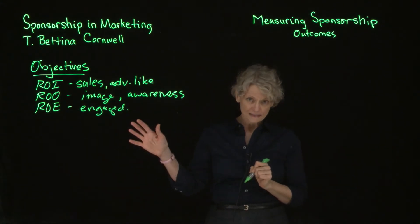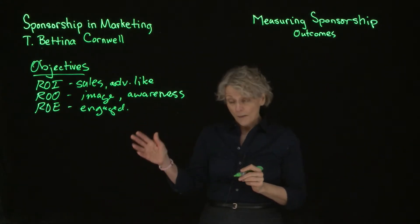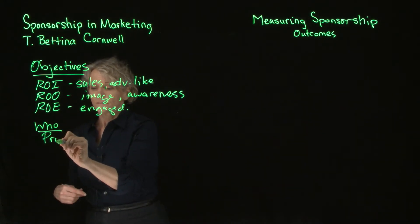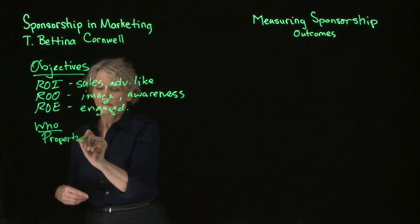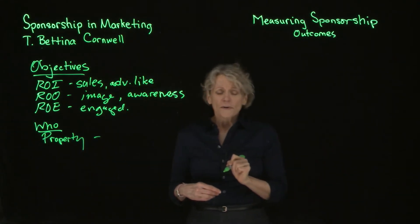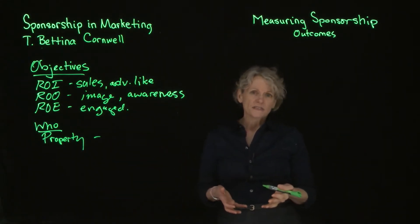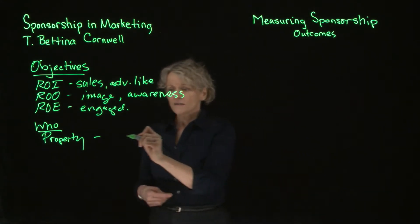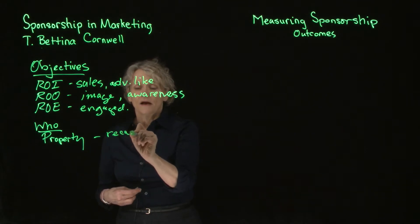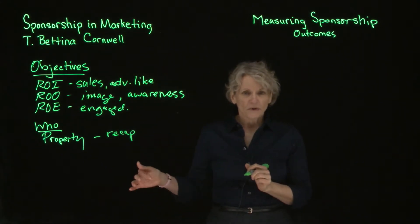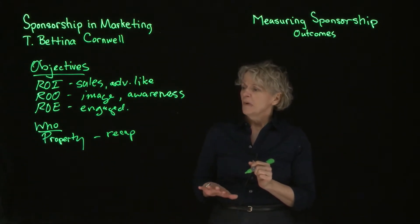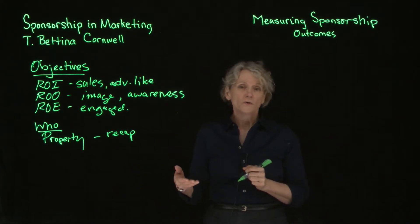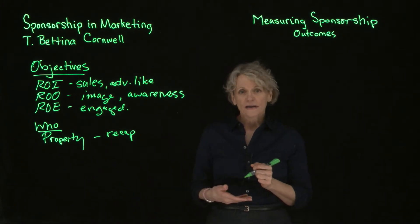So who does this measurement? The property may be the one measuring. The property oftentimes measures the sponsorship outcomes and provides that to the sponsor in something called a recap. That's at the end of the year oftentimes — somewhat backward looking — but it's information collected from, say, season ticket holders or donors, provided to the sponsor.